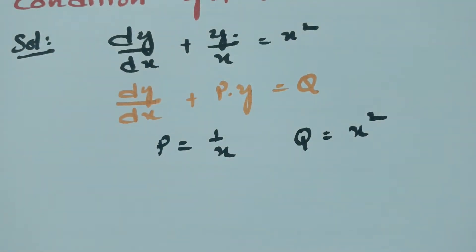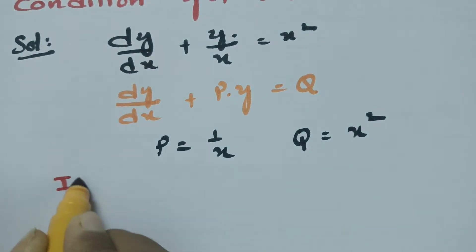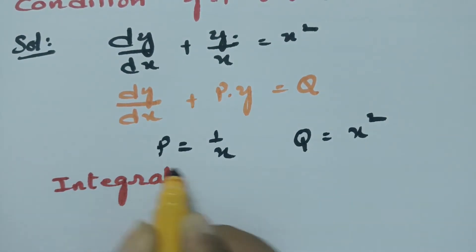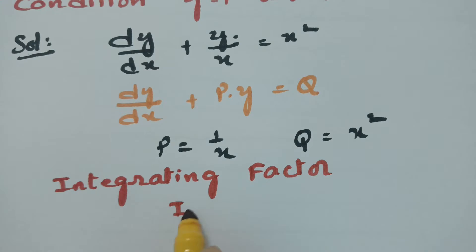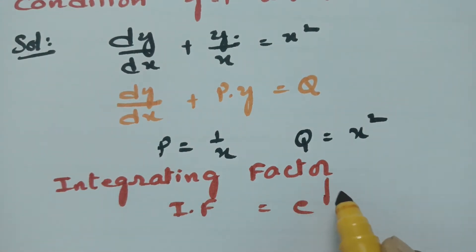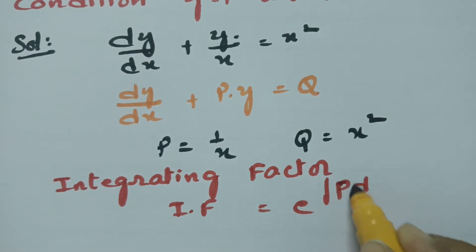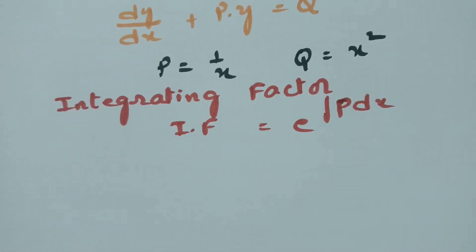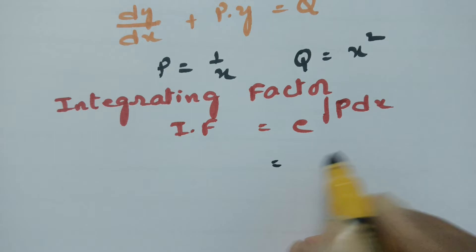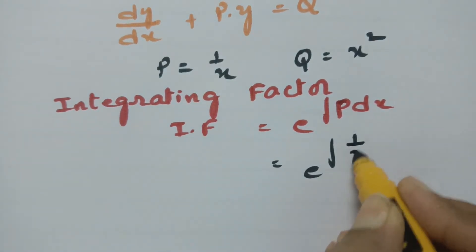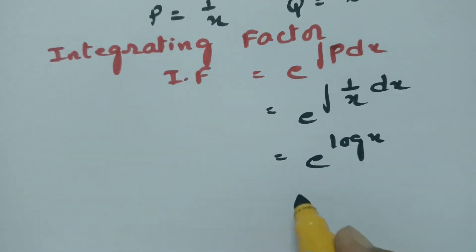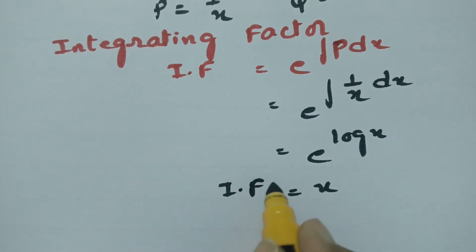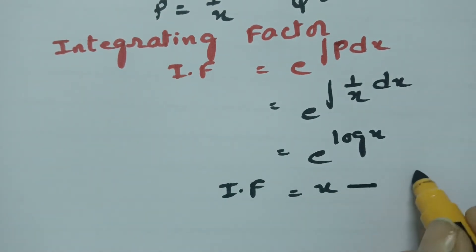After getting p and q we have to find the integrating factor. The integrating factor IF equals e to the power of integral p(x) dx. What is p here? p is nothing but 1/x. So the integral of 1/x dx is log x, and therefore e to the power log x equals x. We got the integrating factor as x.